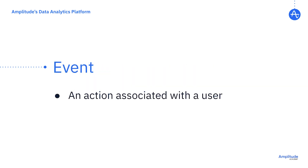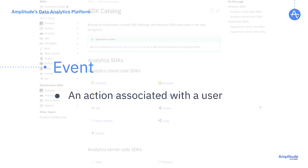You decide which user actions or events get sent to Amplitude. This could be loading a page, filling out a signup form, making a purchase, or playing a game — it really could be anything that a user does in your product.